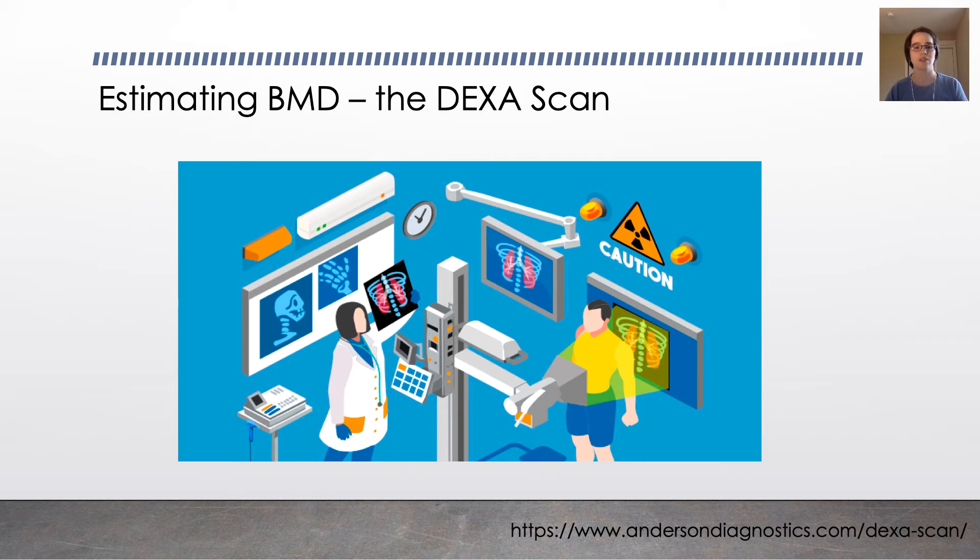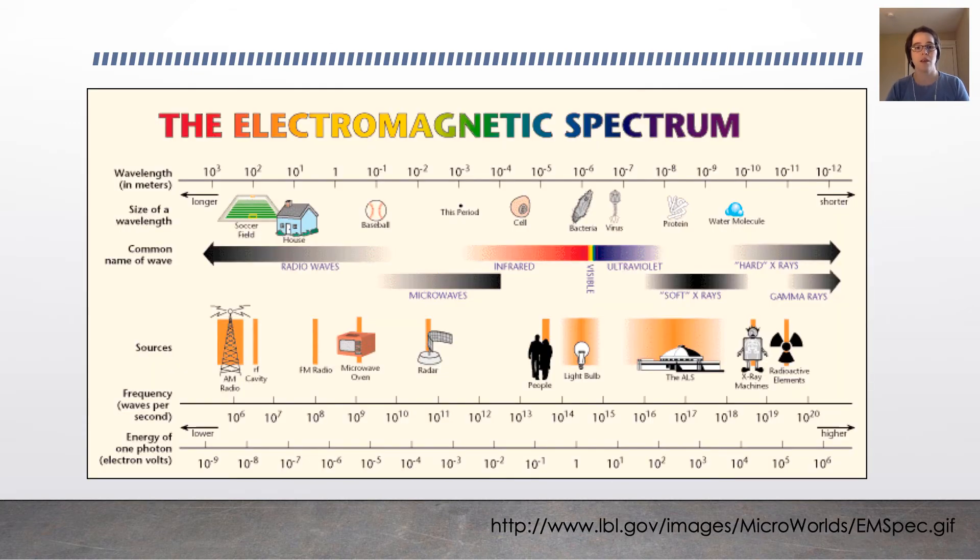And it uses x-ray technology. So the same kinds of x-rays that you would get if you broke your arm and you went into the emergency department and had an x-ray to see where it was broken. An x-ray uses light from the electromagnetic spectrum to make an image of the body. And we use the electromagnetic spectrum all the time. It's all over the place. It's all around us all the time.